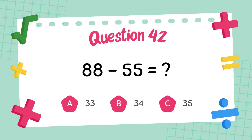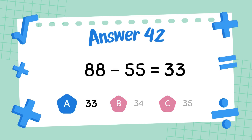What is seventy-nine minus forty-nine? The answer is thirty-three.